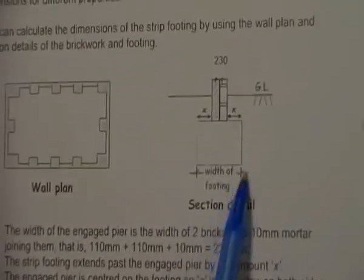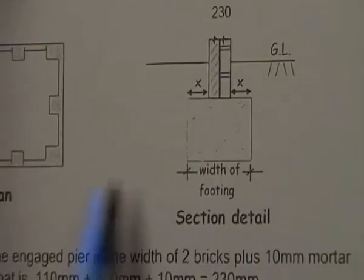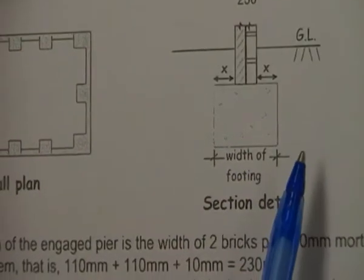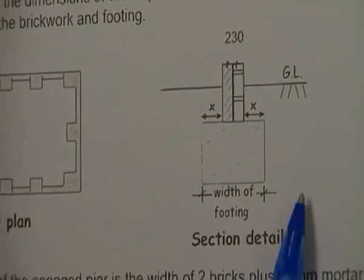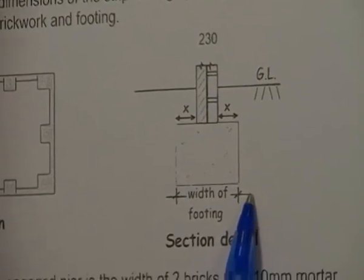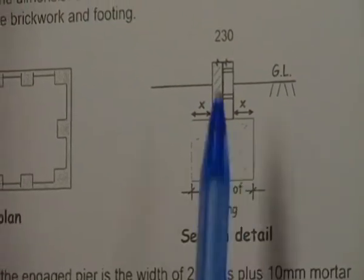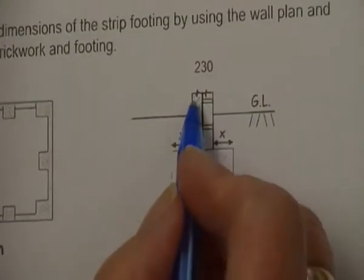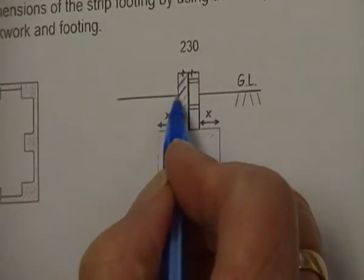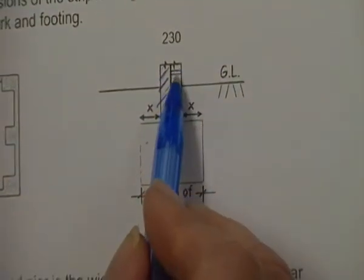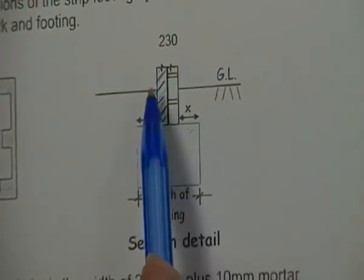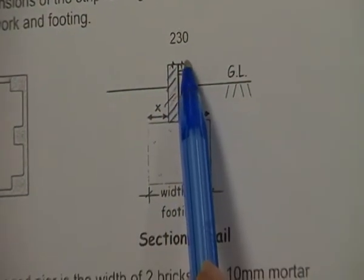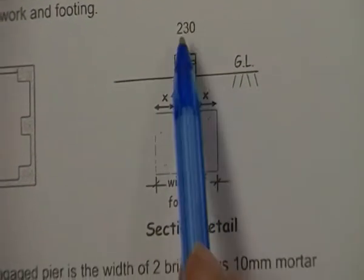This is our footing plan here. The width of the footing can vary for different brickwork and could be wider depending on the soil. When we look here, we have to note that our brickwork, our brick wall, has one skin here and then our engaged pier is sitting there.